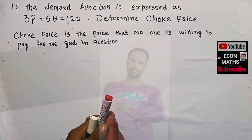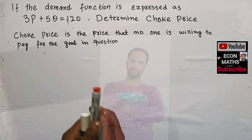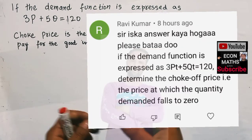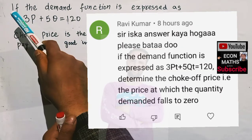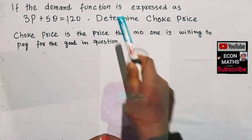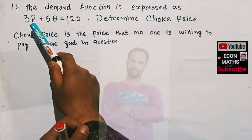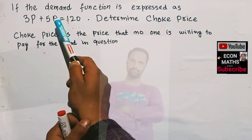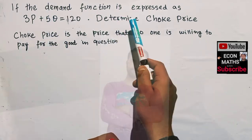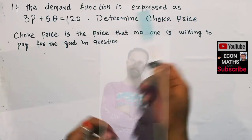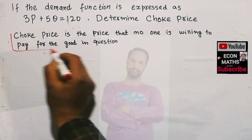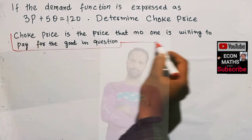Let us follow a question on how to find the choke price from the given demand function. This question was asked by a viewer on the YouTube channel Econ Maths. The question is: if the demand function is expressed as 3P minus 5Q equals 120, where P is the price and Q is the quantity demanded, determine the choke price.